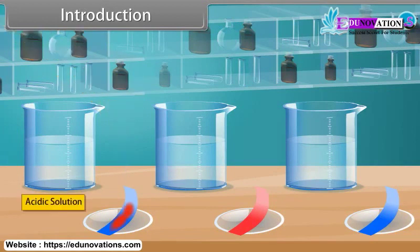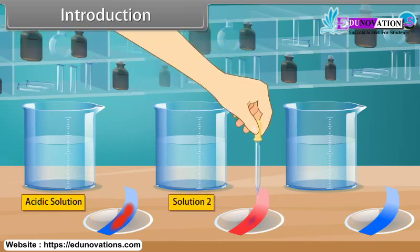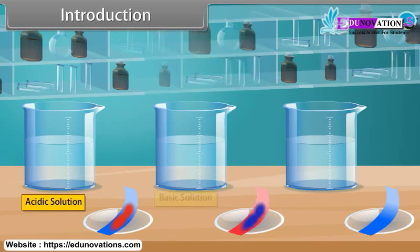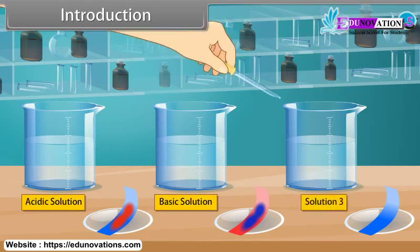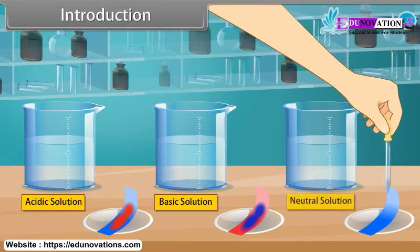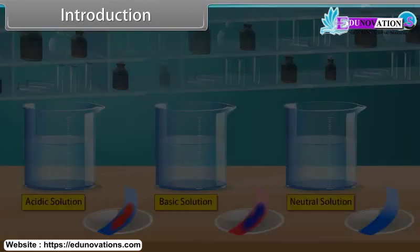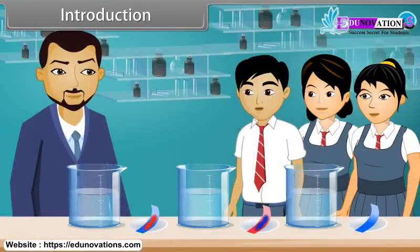It shows acidic behavior. Next, put a drop of solution 2 on the red litmus paper. It turns into blue. It shows basic behavior. Finally, we test for solution 3. The color is not changing. It shows that this solution is neutral and we can say that the solution is at equilibrium.